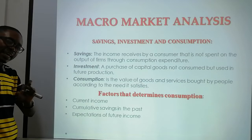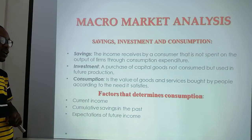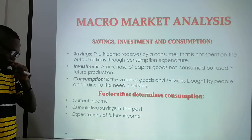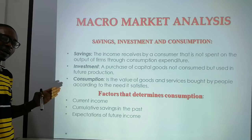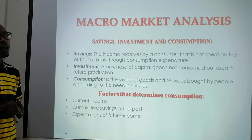Now let's see the factors that determine consumption. We have current income, cumulative savings in the past, and expectations of future income. Cumulated savings means the summation or addition of savings in the past. If you know that you have been able to save a certain percentage of your income, you are more likely to buy whatever you want — it prompts you.